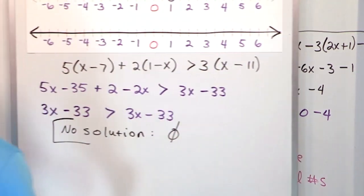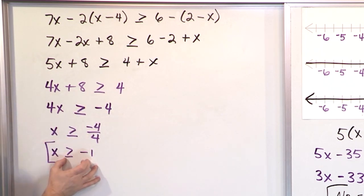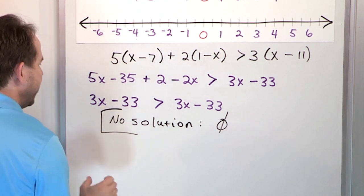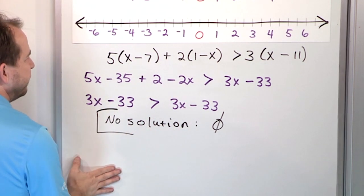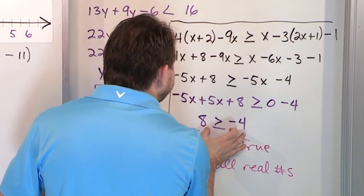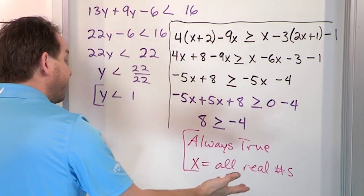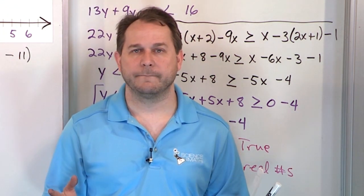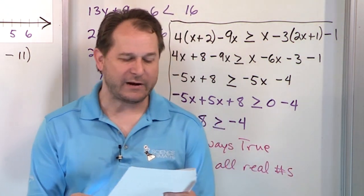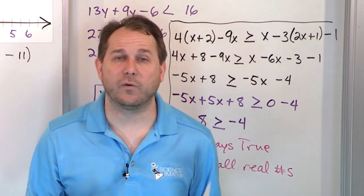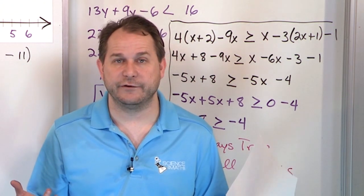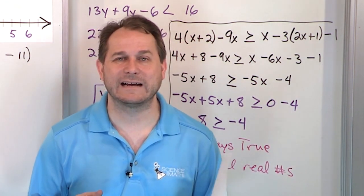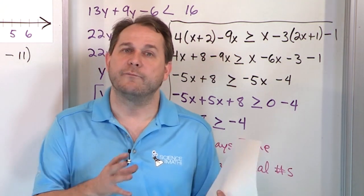So usually in inequalities, you get x is bigger than something or less than something. But sometimes you find it's never true — no value of x makes it work, so you have no solution. And sometimes there are no x's left in the answer at all: if what remains is always true, then all real numbers are solutions; if always false, no solution. Now you understand the basic ideas of solving inequalities in one variable. Go back and solve these problems yourself, then follow along to the next lesson on compound inequalities. Learn anything at mathandscience.com.